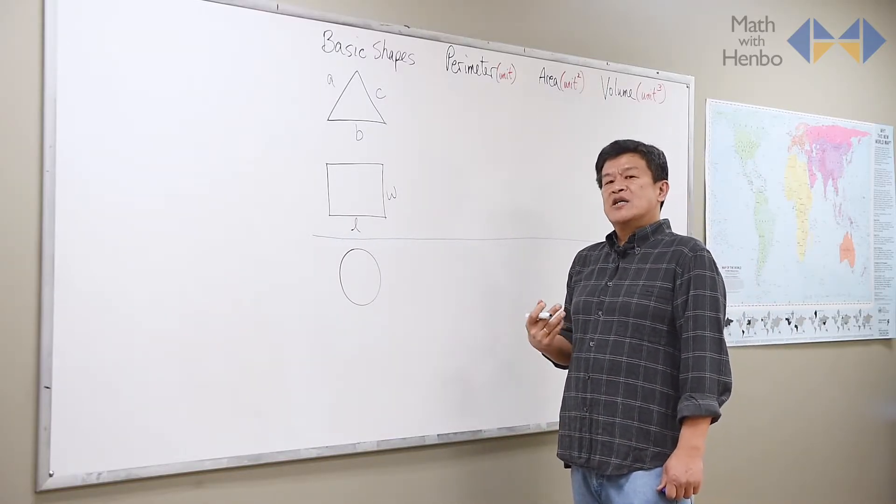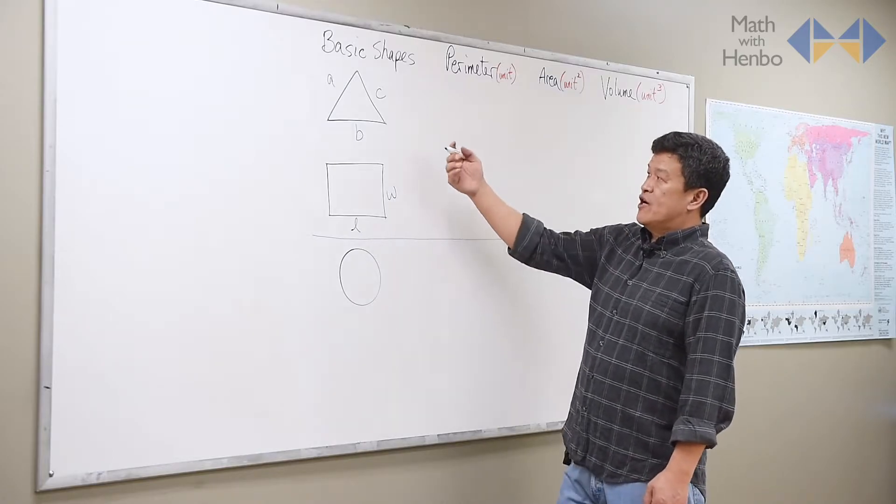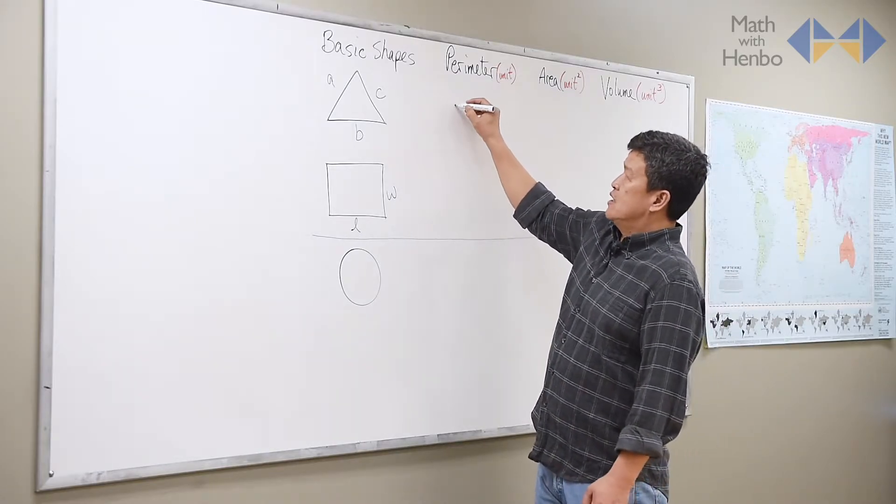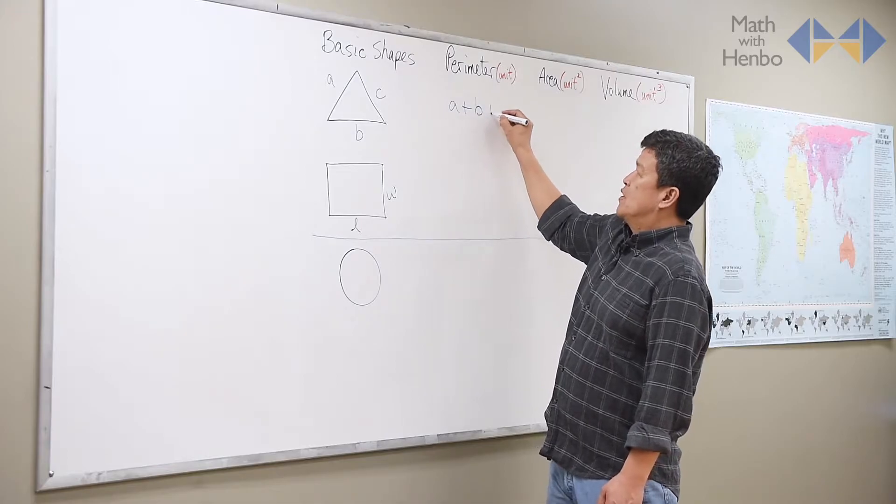For perimeter, it's a distance around an object. So the best thing for triangle sides is just add them up: A plus B plus C.